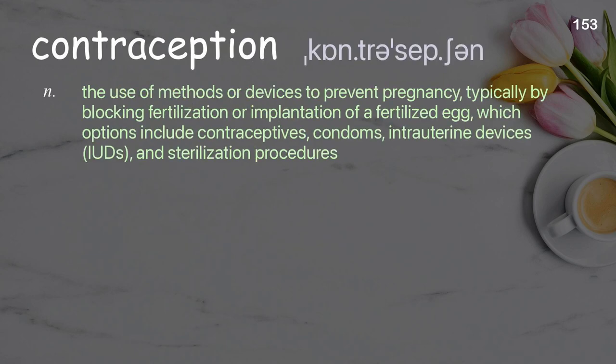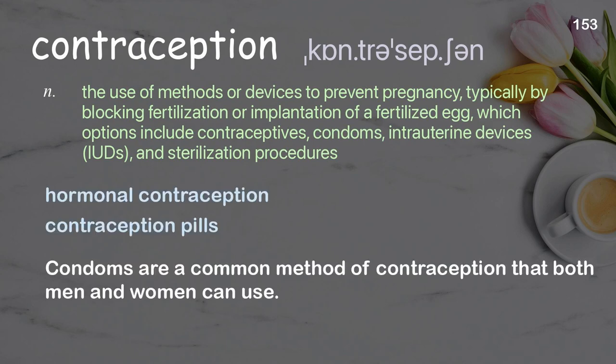Contraception: the use of methods or devices to prevent pregnancy, typically by blocking fertilization or implantation of a fertilized egg; options include contraceptives, condoms, intrauterine devices (IUDs), and sterilization procedures. Examples: hormonal contraception, contraception pills. Condoms are a common method of contraception that both men and women can use.